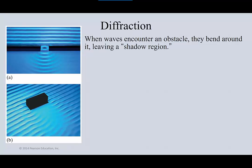The next phenomenon is called diffraction. This is when waves encounter an obstacle and bend around it, leaving a shadow region. Looking at this top picture, wave fronts are coming in and hitting bars with a hole or space between them. The wave energy gets through that space and as it does, it bends around the corner. This is how we can hear around corners because sound waves diffract around corners, and how you can see light coming through a doorway as it bends around the edges.